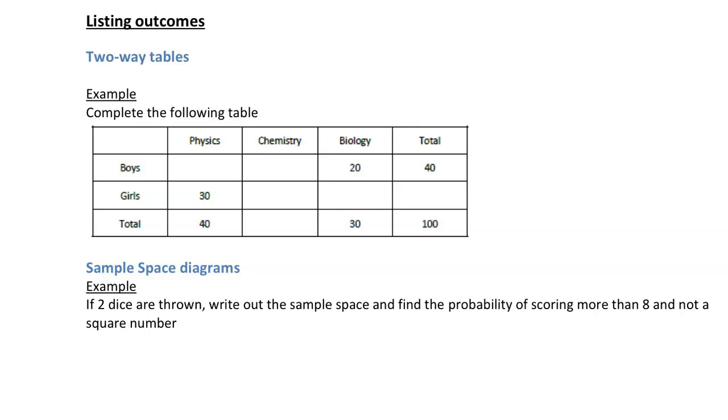A nice easy example here, we just have to fill in this table. If we have a look here, we know the total is 40. So the boys plus the girls must add up to be 40, so that means the boys are going to be equal to 10. To get this one here, we know 40 plus 30 plus something adds up to give you 100. So with a bit of working out, we can work out the missing total for chemistry is 30. And then to get this one, we know 20 plus something gives you 30, so the missing thing is going to be 10.